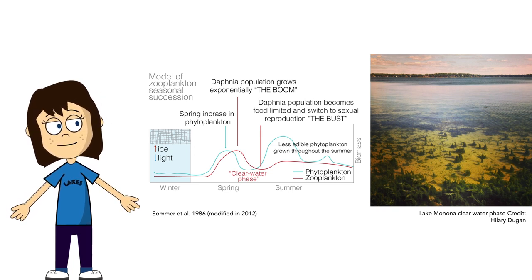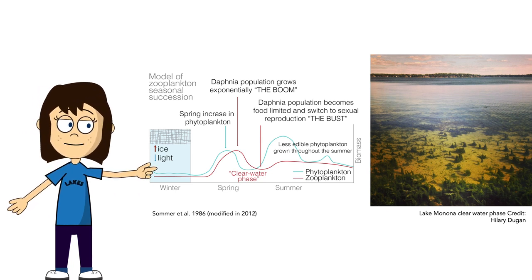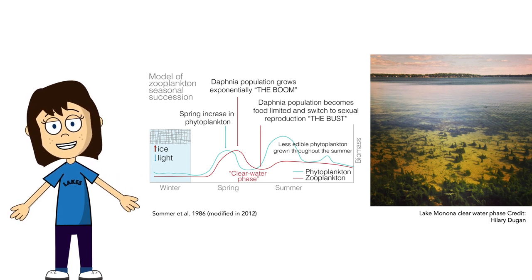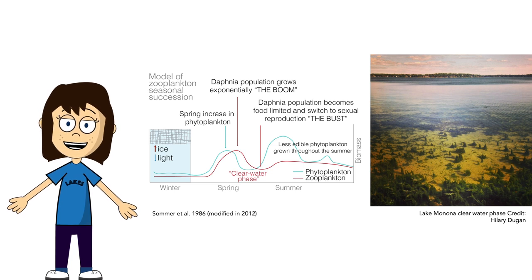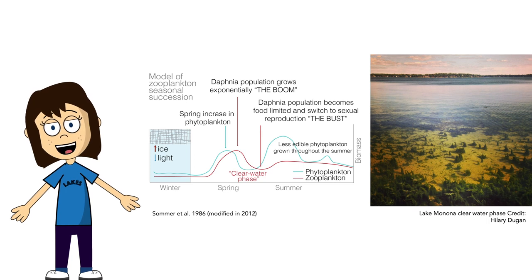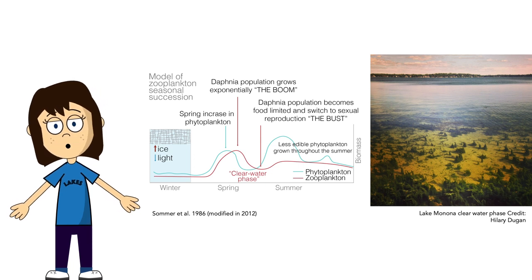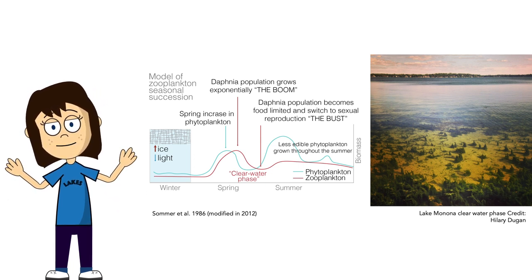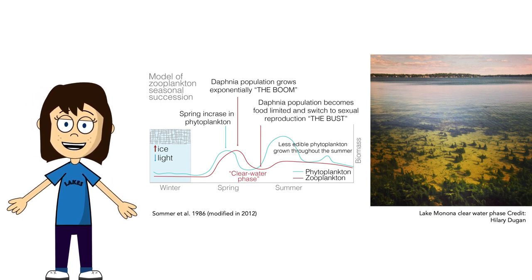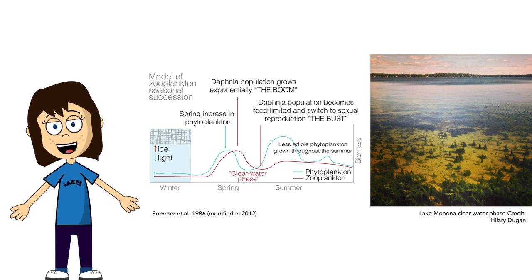If you ever stand near the shore of Lake Monona or Lake Mendota in the spring, it might look unusually clear — that's due to interactions between population dynamics of phytoplankton and zooplankton. Once the ice comes off the lake in spring, we see a big surge in phytoplankton biomass — almost exponential growth — but then that growth is limited by predation by zooplankton, who are also undergoing a big increase in biomass. Eventually, zooplankton eat all of the phytoplankton, run out of food, and their populations decrease as well. We see this boom-bust cycle in both phytoplankton and zooplankton in the spring.